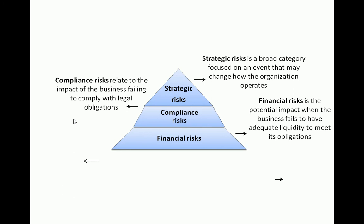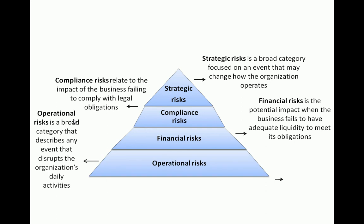Financial risks are any impact that affects our cash — anything that would affect our ability to meet our financial obligations, like events that affect our credit score and our ability to get loans. In IT, we're not always so concerned about financial risks. Operational risks are the biggest category for IT — it's any event that disrupts the organization's daily activities. These could be non-IT things like fire, flood, or natural disaster, or people not showing up for work. In IT, it could also be things like the database server going down, losing data, or email not working.